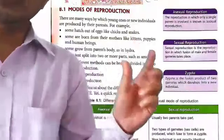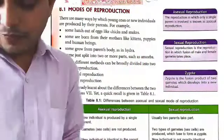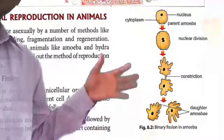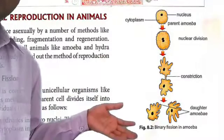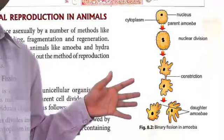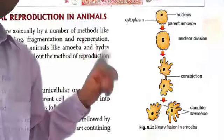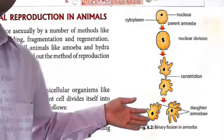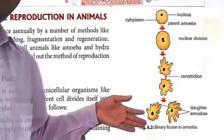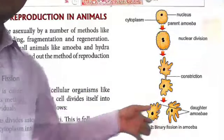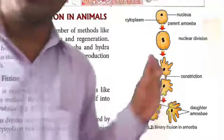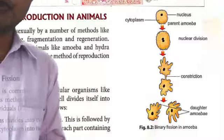Amoeba divides by one type — asexual reproduction. The nucleus divides, then the cytoplasm and plasma membrane divide, and lastly two amoeba are produced. So amoeba reproduces by asexual reproduction. This is shown in figure 8.2 — the process of amoeba reproduction.